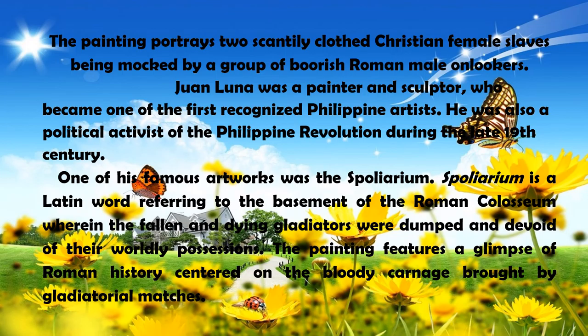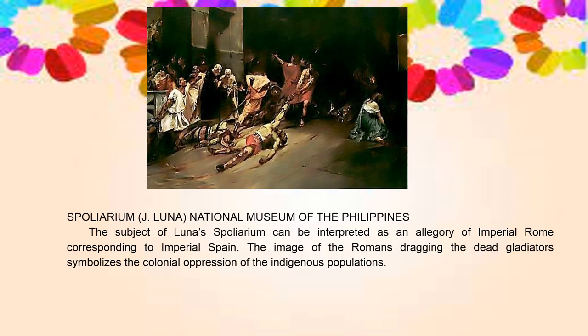Juan Luna was a painter and sculptor who became one of the first recognized Philippine artists. He was also a political activist of the Philippine Revolution during the late 19th century. One of his famous artworks was the Spoliarium — a Latin word referring to the basement of the Roman Colosseum, where fallen and dying gladiators were dumped and stripped of their worldly possessions. The painting centers on the bloody carnage brought by gladiatorial matches. The subject can be interpreted as an allegory of imperial Rome corresponding to imperial Spain, with the image of Romans dragging dead gladiators symbolizing colonial oppression of indigenous populations.